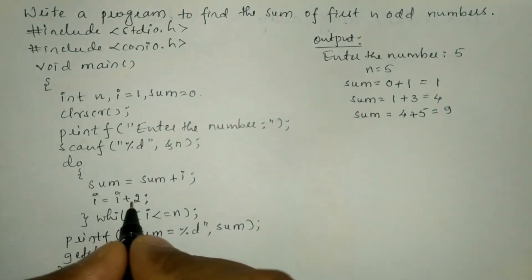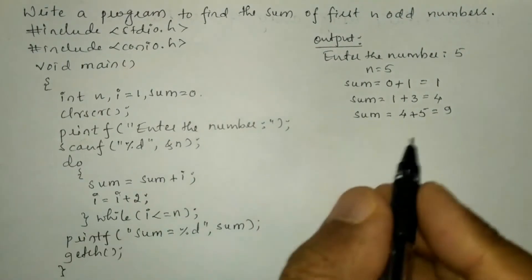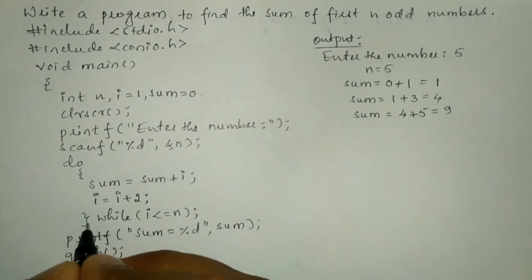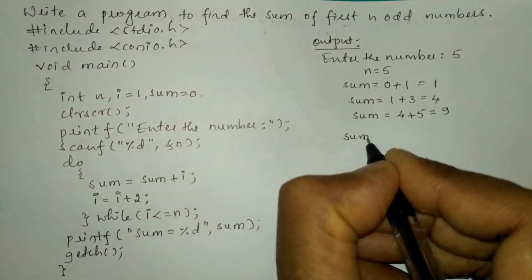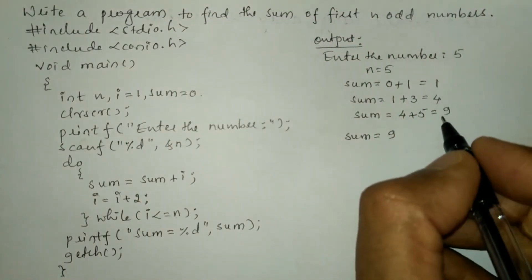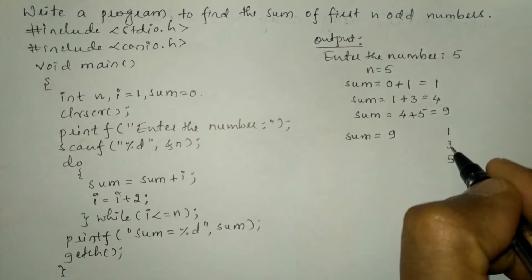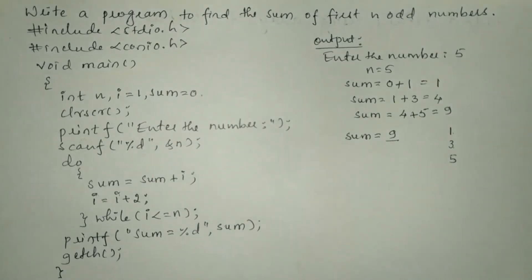Now we increment i by two: five plus two is seven. Is seven less than or equal to five? No — condition fails. Once the condition fails, control comes out of the do-while construct and executes the next statement, printing 'sum is equal to' followed by the value in sum, which is nine. You can easily verify: the first odd numbers between one and five are one, three, and five — three plus five is eight, eight plus one is nine. So it prints sum is equal to nine.